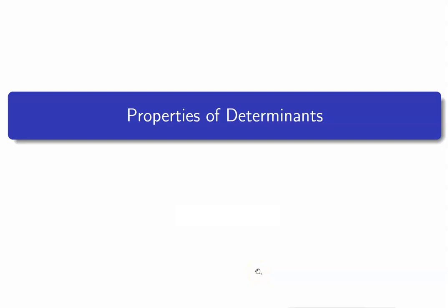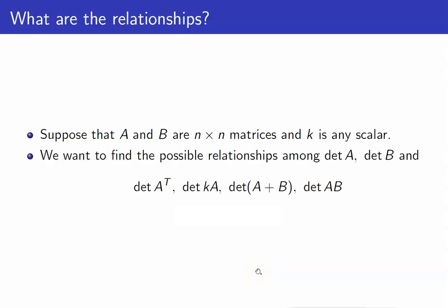In this lesson, I am going to discuss properties of determinants. Suppose that we have two n by n matrices, A and B. We want to find the possible relationships among the determinant of A, determinant of B, the determinant of the transpose, the determinant of a scalar multiple, the determinant of the sum, and the determinant of a product of two matrices.